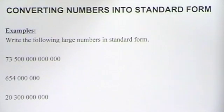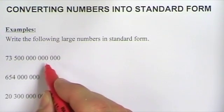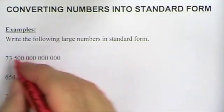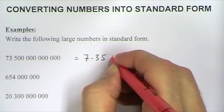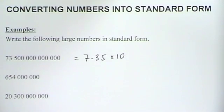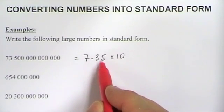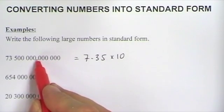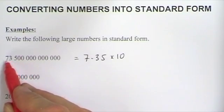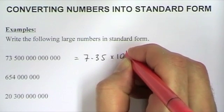Let's write some numbers in standard form. For this first number, the first part must be 7.35 — a number between 1 and 10. Then times 10 to a power. The decimal place used to be at the end; we've moved it 13 places. So it's 7.35 times 10 to the 13.